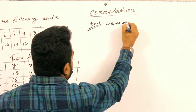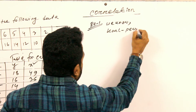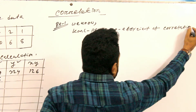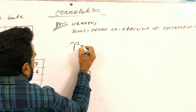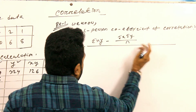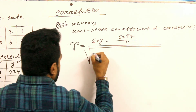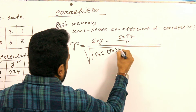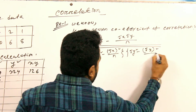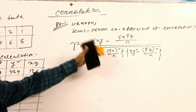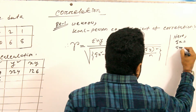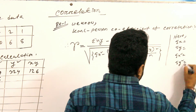We know the Karl Pearson formula. Coefficient of correlation: summation of XY minus summation of X times summation of Y divided by N, root over summation of X squared minus summation of X whole square divided by N, multiplied by summation of Y squared minus summation of Y whole square divided by N. Now we go to the table: sum of X, sum of Y, sum of X squared, sum of Y squared, sum of XY.